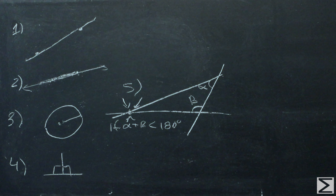Postulate three: it is possible to describe a circle with any center and distance. Postulate four: all right angles are equal to one another.